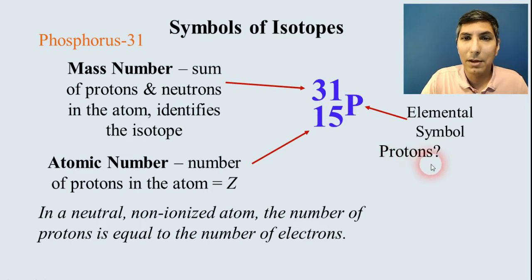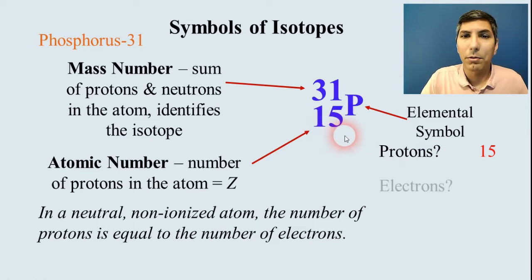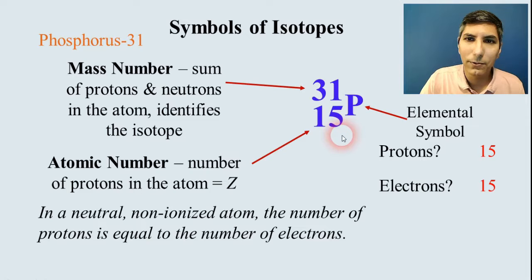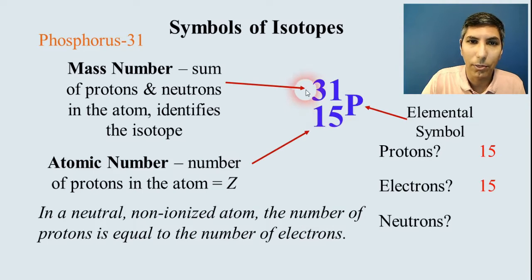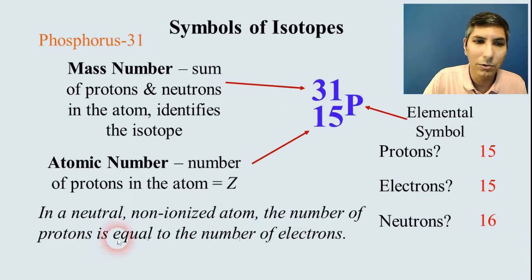If we were asked how many protons, the atomic number 15 will be that. The number of electrons is going to be the same as long as this atom is not ionized, so it's also 15 electrons. And like we said, neutrons, we have to subtract. So 31 minus 15 would be 16 neutrons.